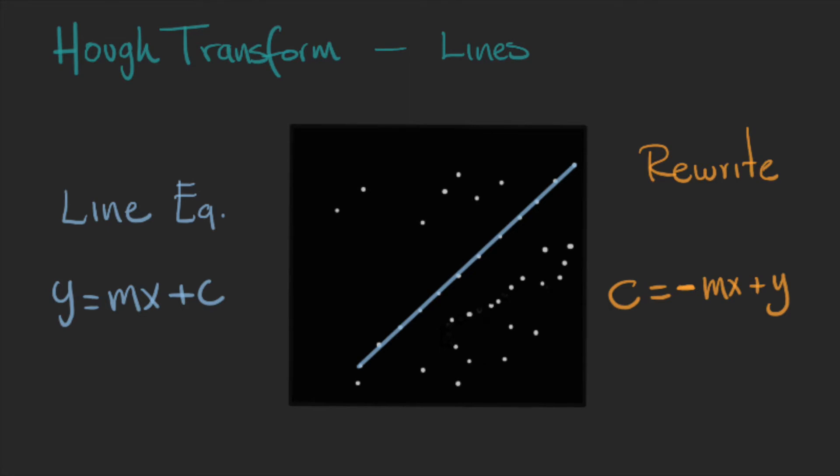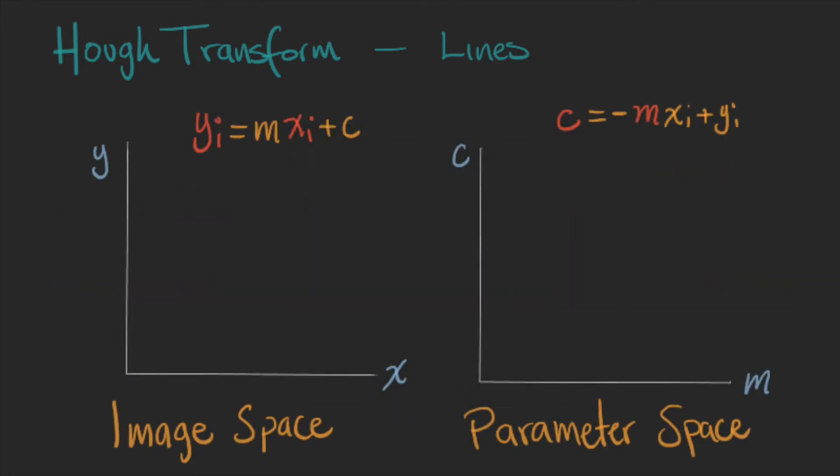The first one is the image space with coordinates x,y and the second one the parameter space in which one axis is the slope and the other is the intercept.